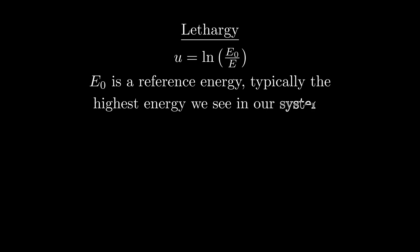This quantity is called lethargy, and we represent it with the letter U. Lethargy is defined as the natural logarithm of the ratio of some reference energy, E0, and our neutron's energy, E.